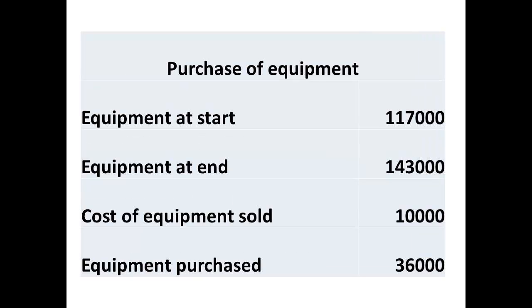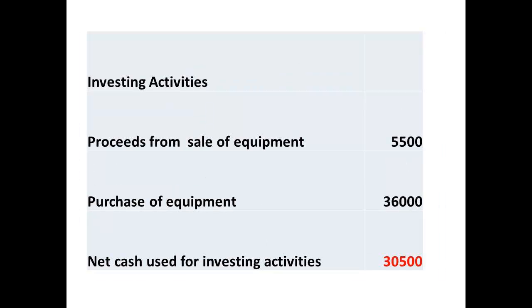To determine the value of equipment purchased, we take the value for equipment at the start of the year, subtract the value for the sale of the loom, then subtract this from the value at the end of the year. This gives a figure of $36,000 for the purchase of equipment. The sale of equipment less the purchase of equipment gives a figure of $30,500 as a cash outflow for investing activities.